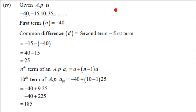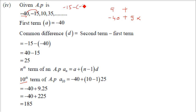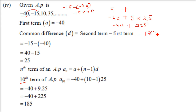Here we have A as minus 40. We need to find the 10th term, so it is A plus 9D. We need to find D first. D is minus 15 minus of minus 40, which is minus 15 plus 40, and 40 minus 15 is 25. So D is 25. Then 9 into 25 is 225. Subtract 40 from it: 225 minus 40 is 185. So 185 is your 10th term.